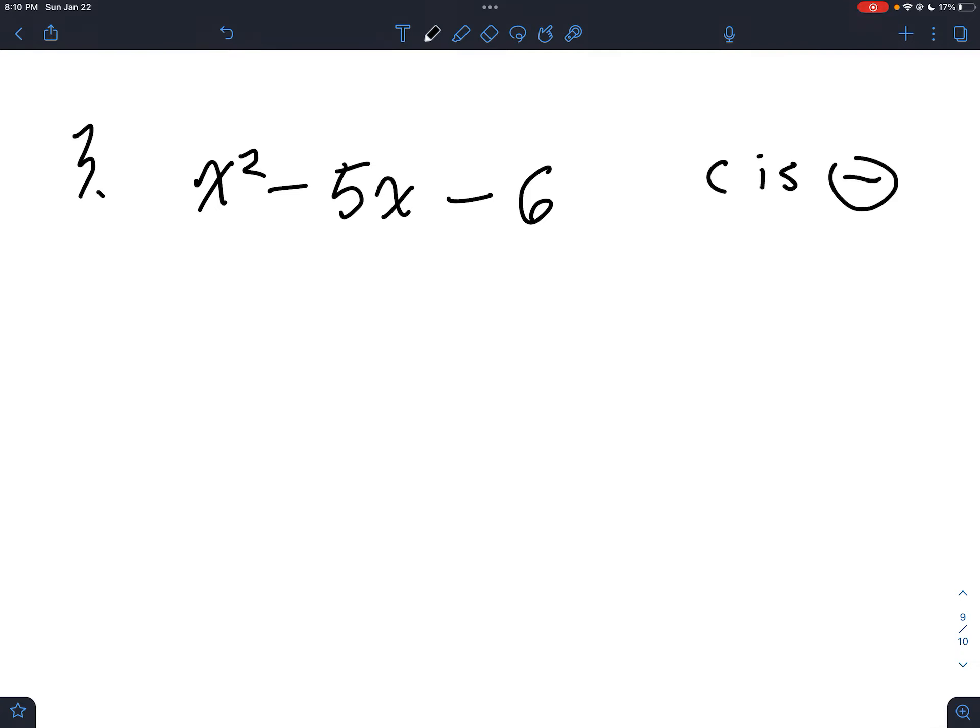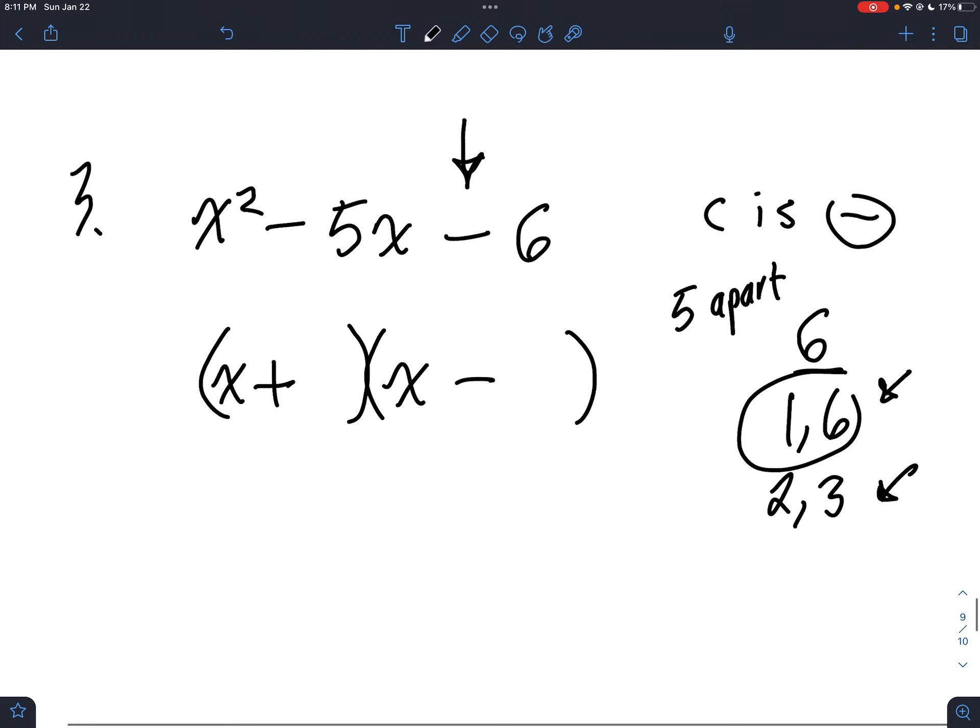And this one, we have C is negative. So, when C is negative, the only way to get a negative number from multiplying is plus and minus. So, this is our template. And the only numbers we can use are ones that multiply to 6. 1 and 6, 2 and 3. So, when you make the choice here, it's a little tricky here. Because I can get the number 5 by adding and subtracting with both of the pairs. I could subtract these and get a 5 somehow. Or I can add these and get 5, 2. So, which one is it? Well, C is negative. So, those special considerations come into play. And I'm going to pick the ones that are 5 apart.